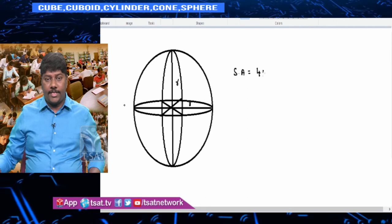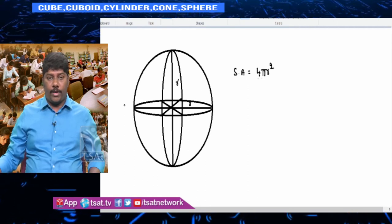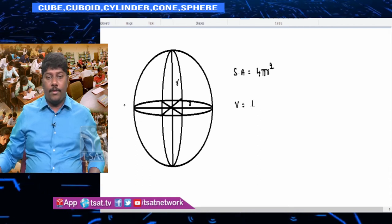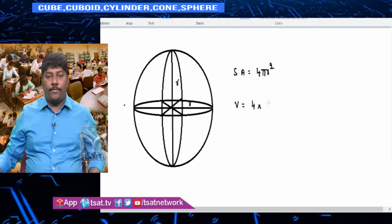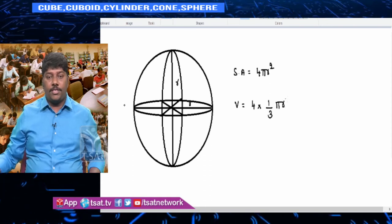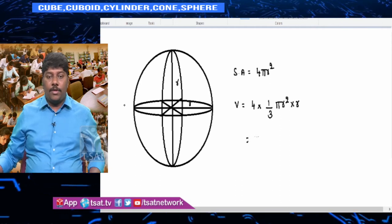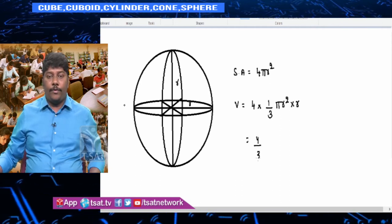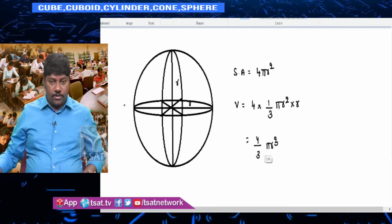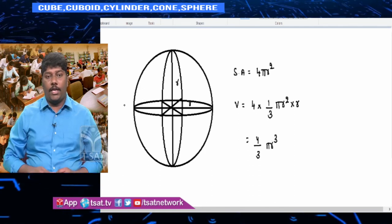The surface area of a sphere is 4πr². For volume: four cones make a sphere, so volume = 4 × (⅓πr²h) where h = r, giving volume = 4/3·πr³.